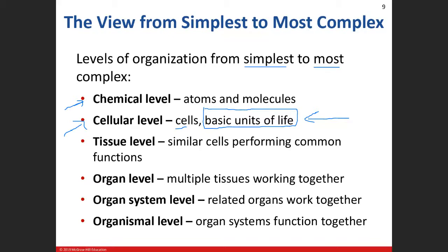Then the next level is the organ level. We're going to take a bunch of different tissues and they'll all start working together — not all of them, but some of them at one point and some at a different time. Like the liver — it's got a whole bunch of different tissues and a whole bunch of different functions. Your stomach is a perfect example: the stomach has got all four tissue types of the body inside it.